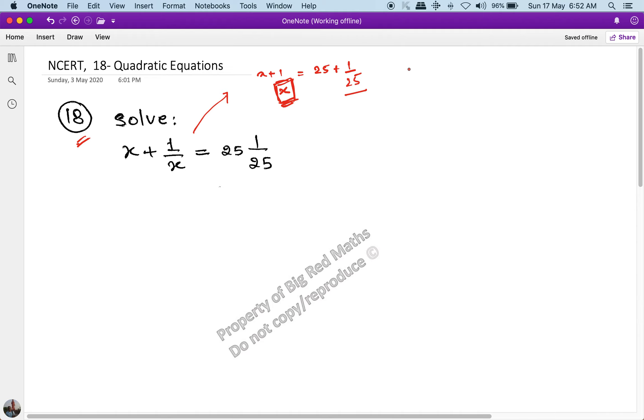So, x plus 1 by x is equal to 25, 1 by 25. 25 times 25 is 625. And plus 1, 626 upon 25x.